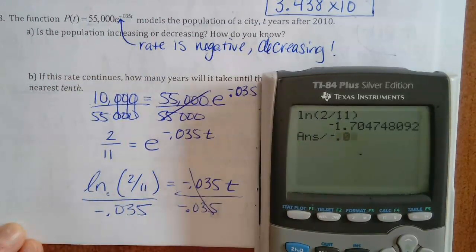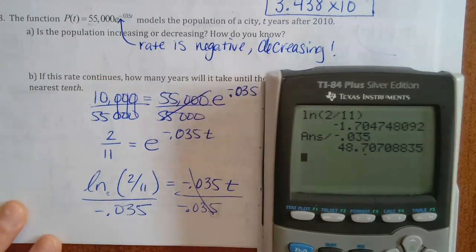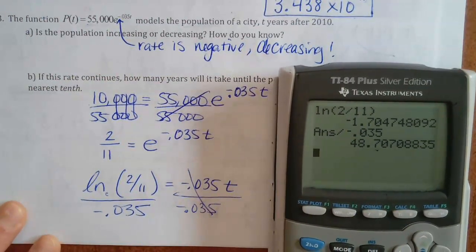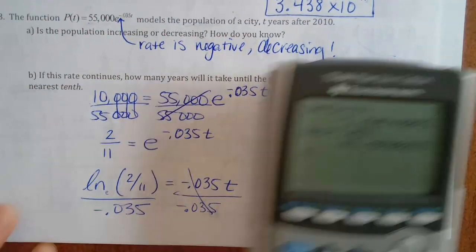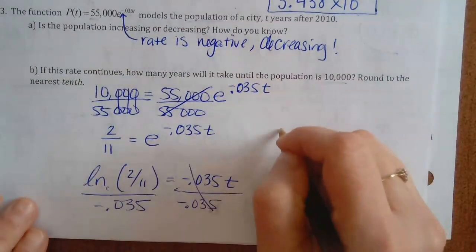Natural log of 2 divided by 11, take that answer and divide it by negative 0.035. Rounding to the nearest tenth gives about 48.7 years.